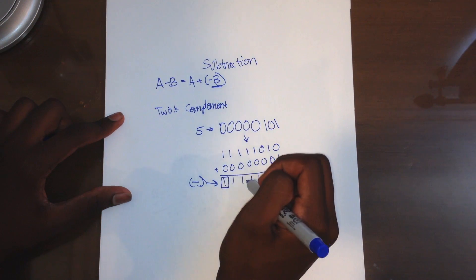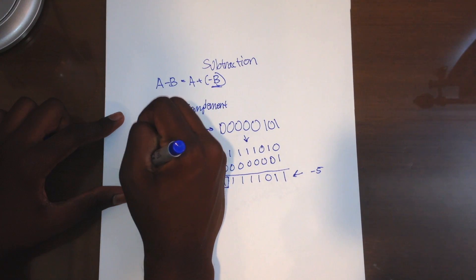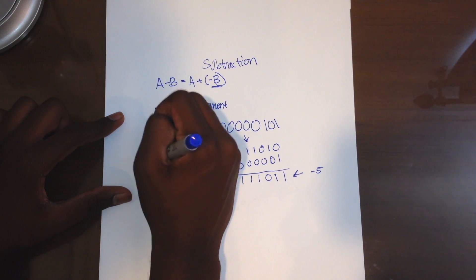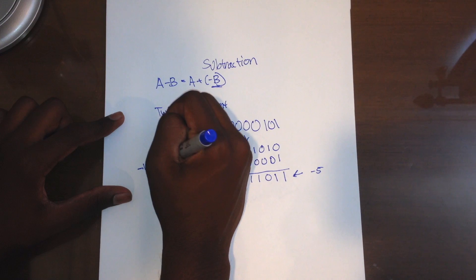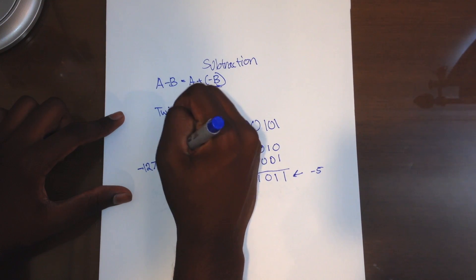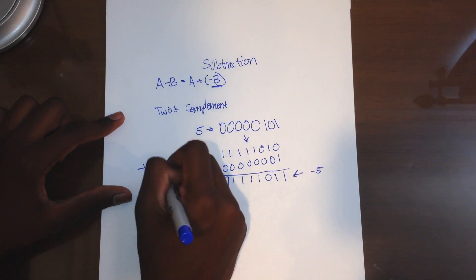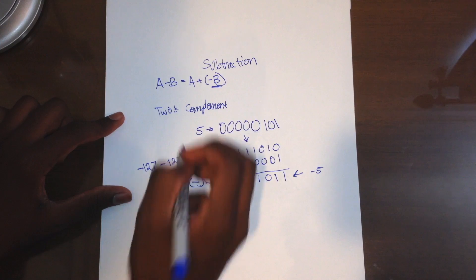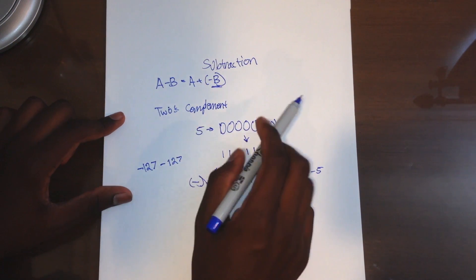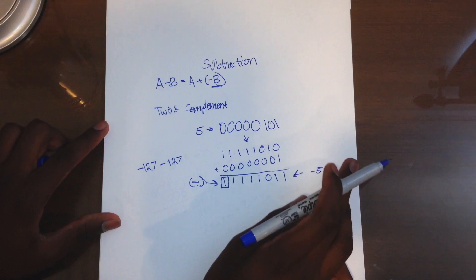So actually, for bytes, you have a possible range of values from negative 127 to positive 127. This is the range of values you have for a signed byte.